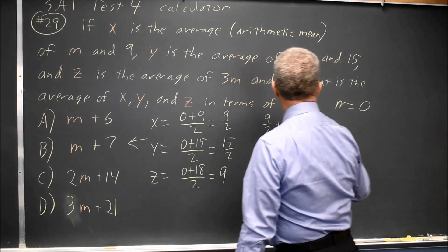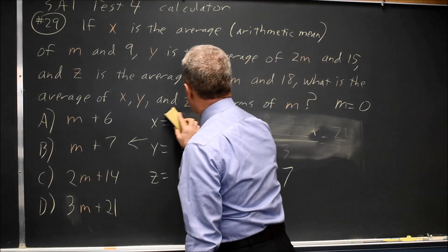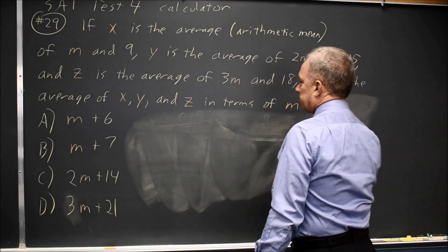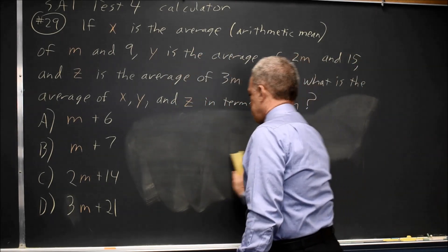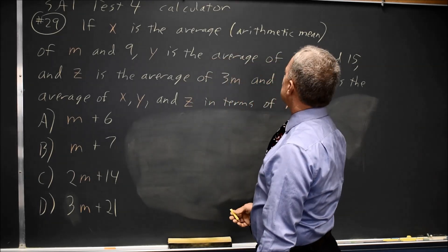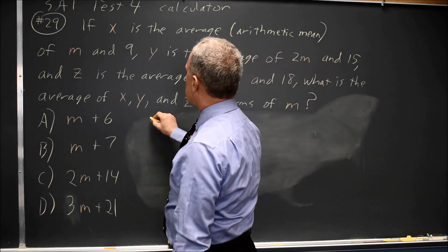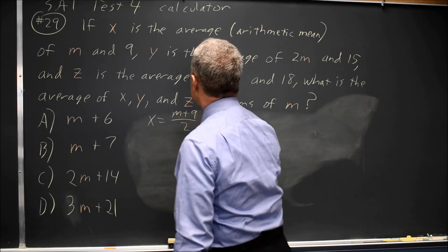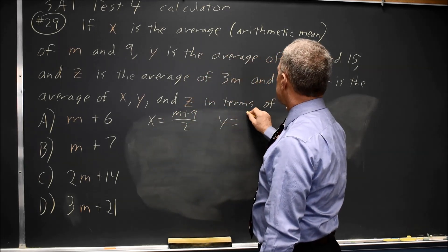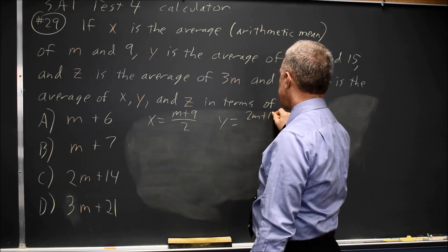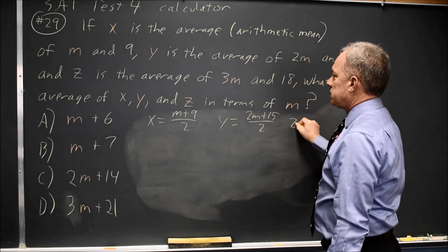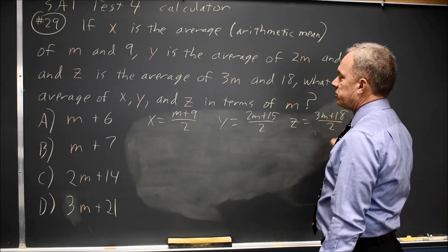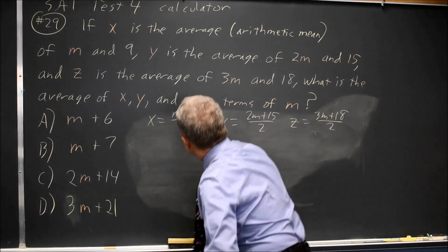Now I could also do this algebraically, though it would be uglier. The average of M and 9 would be X equals M plus 9 over 2. Y equals 2M plus 15 over 2. Z is 3M plus 18 over 2. And I want to average those three numbers.